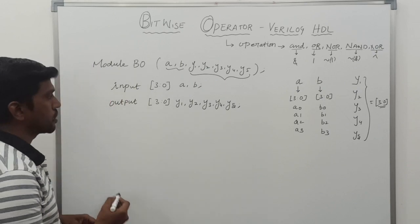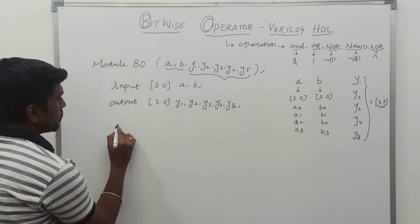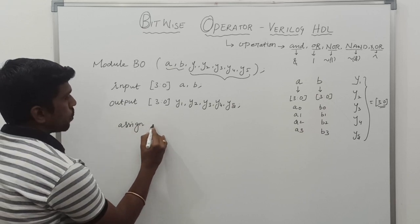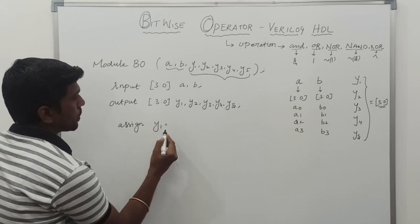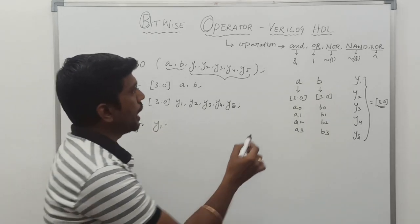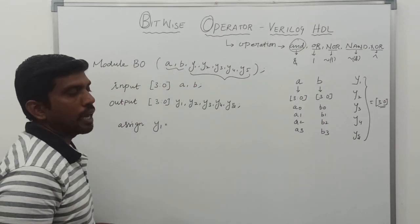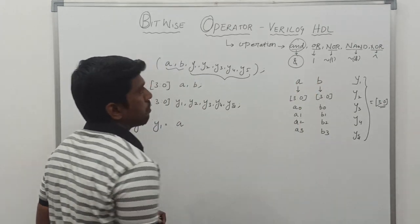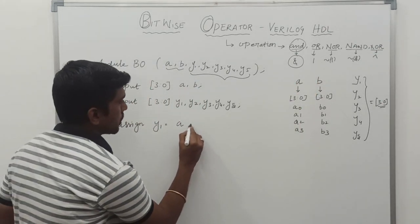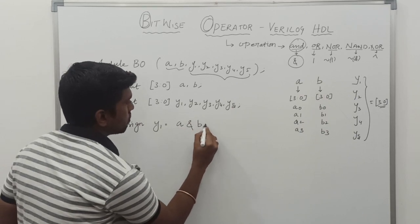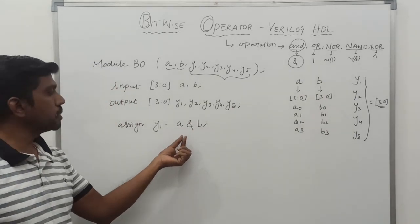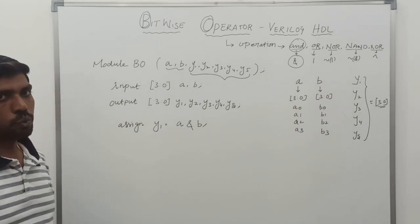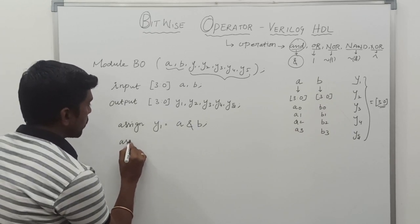Now I go to the operations. Assign Y1 equal to A and B. The symbol for AND operation is the ampersand symbol. So this ampersand represents the AND operation, and A AND B gives the result stored in variable Y1. The first operation is over.